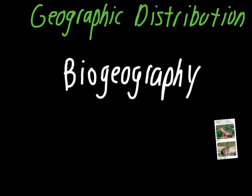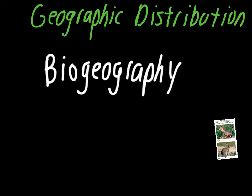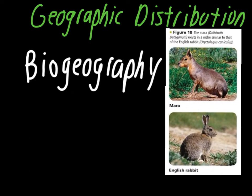Tying this into evolution: species that live in a similar geographic area are going to be more closely related to other individuals from that area because they have had more contact over time. Even though the Mara and the English rabbit look somewhat similar, they have actually diverged far longer ago in their evolutionary paths than you might think. With one being from South America and the other from Europe, these species have not been in contact with each other for a substantial amount of time.